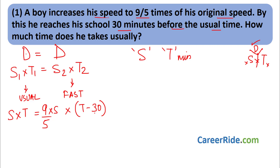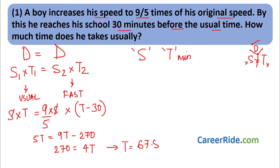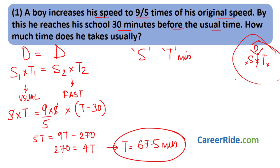We just used our DST formula and identified the category — distance same — to solve it easily. Similarly, if the speed is the same in a problem, the same approach applies using the S×T = S×T equation. The key steps are: draw DST, identify the category, set up the equation, and solve.